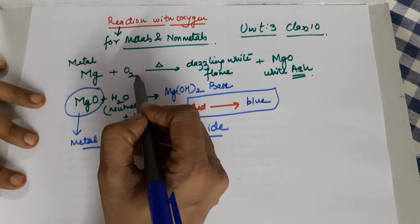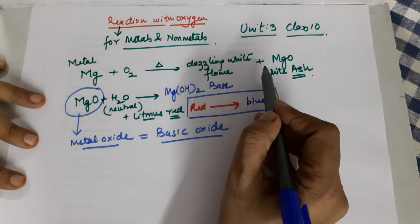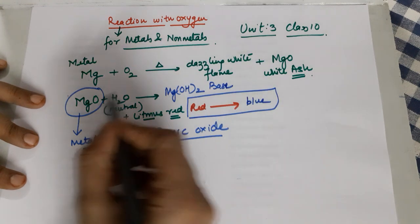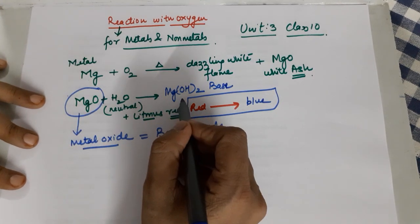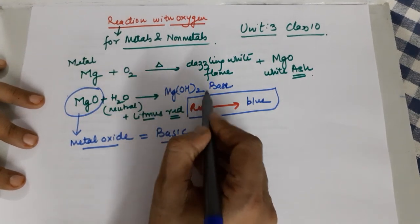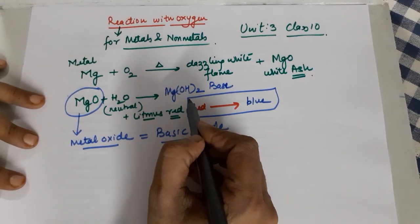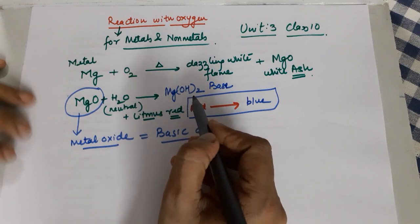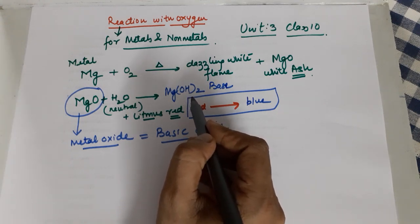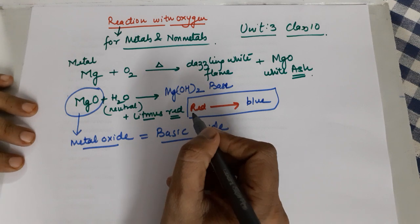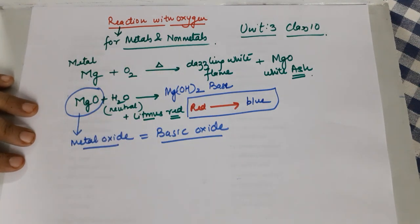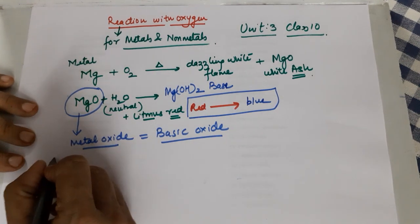Our conclusion is that metals combine with oxygen to form an oxide which is basic in nature, and if it dissolves in water it leads to the formation of metal hydroxides, which are also basic in nature. Coming to the second example — that of a nonmetal.